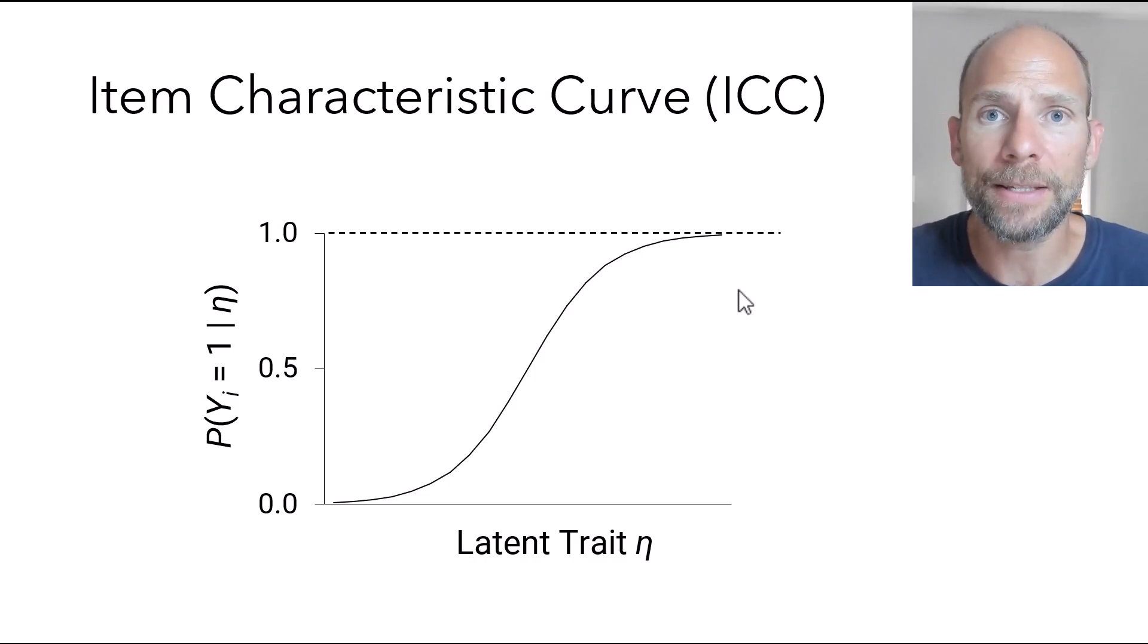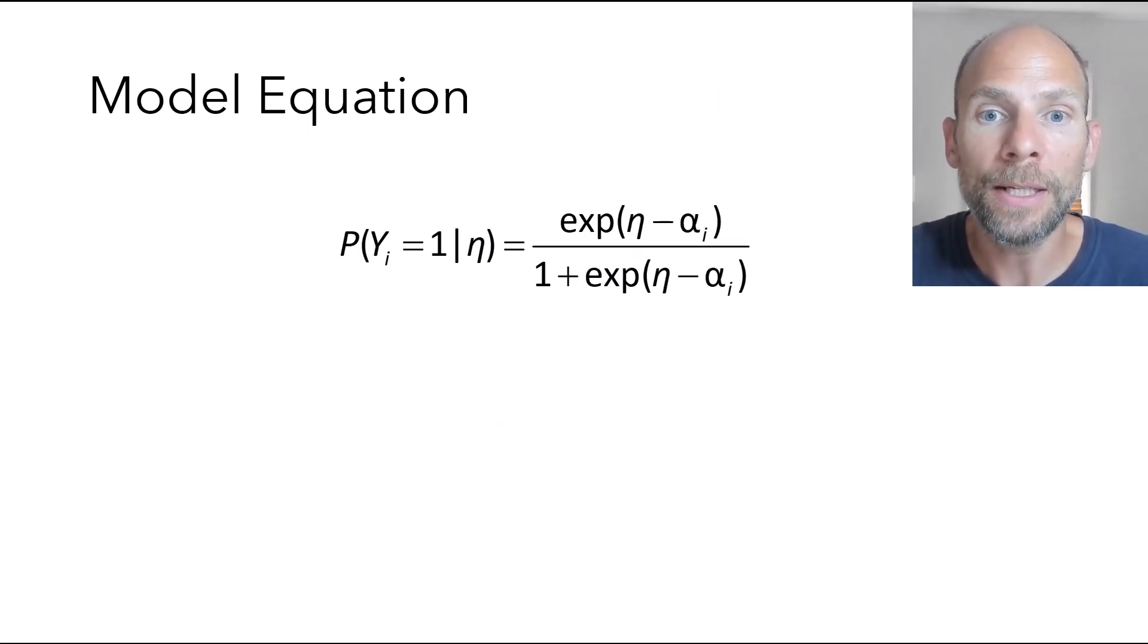So how do we get such an S-shaped curve mathematically? There are different possibilities. There are different mathematical functions that will come with such an S-shaped curve. And the one that happens to be used in the Rasch model is a logistic regression equation. If you have already learned about logistic regression analysis, then we use a very similar equation for binary outcome variables that are predicted in logistic regression analysis by one or more predictive variables. And so this exact same concept is used here as well.